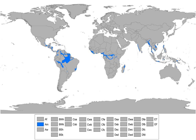A tropical monsoon climate, however, has its driest months seeing on average less than 60 mm but more than 100 mm of total annual precipitation. This is in direct contrast to a tropical savanna climate, whose driest month sees less than 60 mm of precipitation and also less than 100 mm of total annual precipitation.